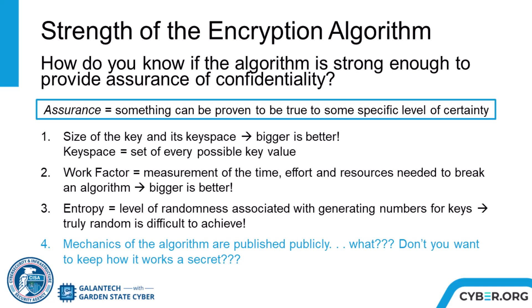Entropy is the level of randomness associated with generating numbers for keys. This means there is no way to piece out meaning from a cipher text. For instance, frequency analysis is defeated when a sufficient random substitution is performed. However, truly random is difficult to achieve.